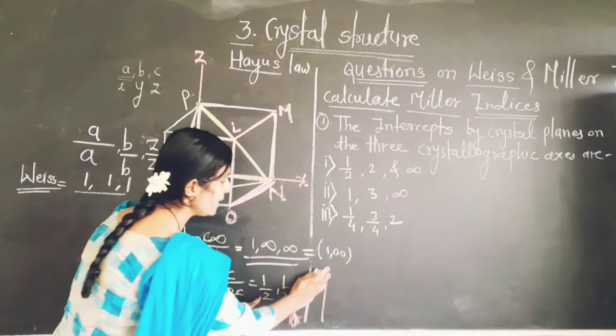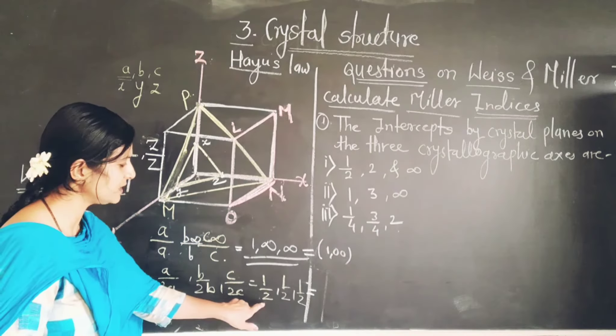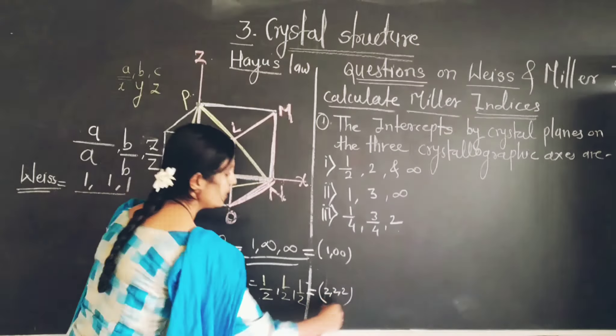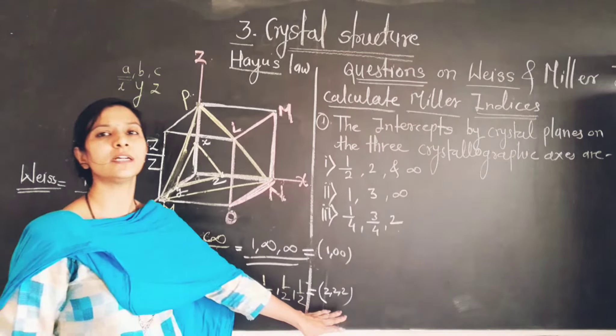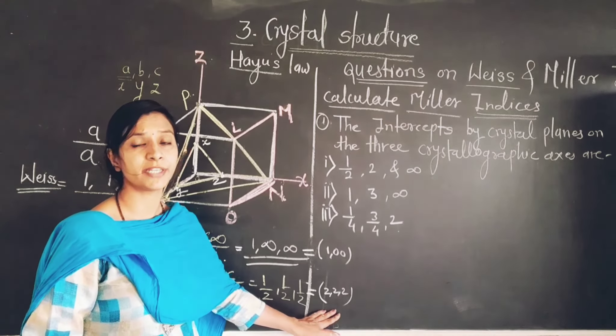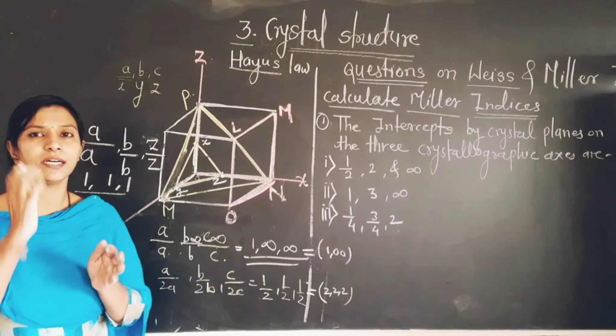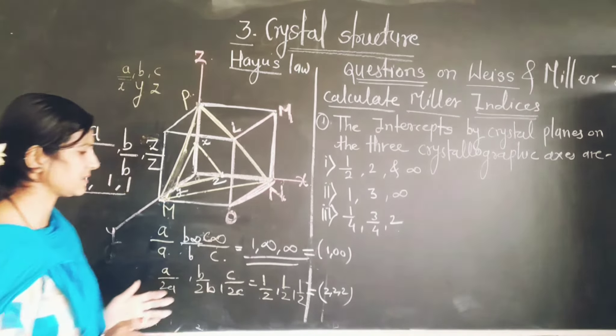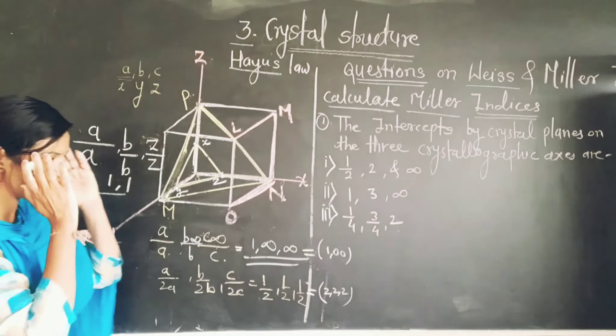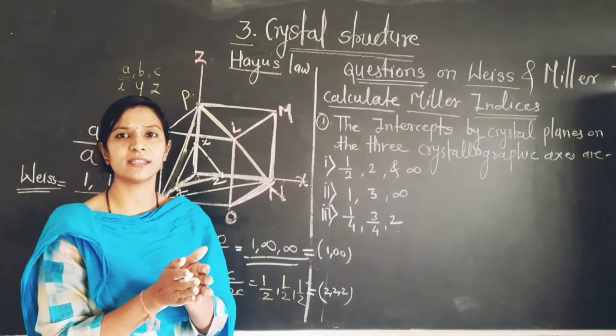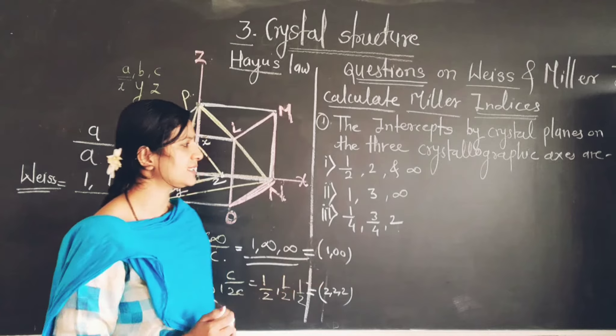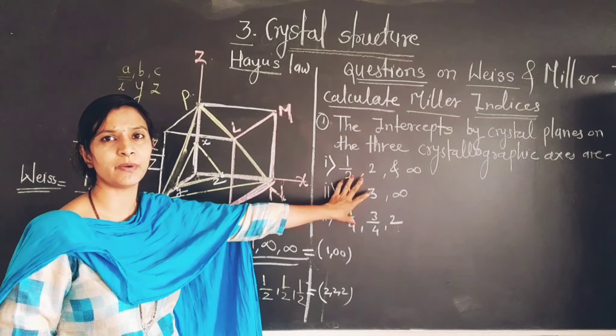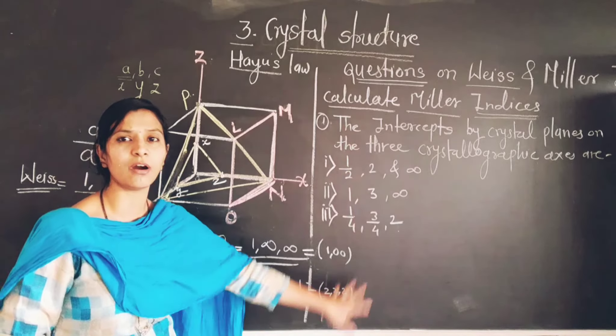And same thing, when I write the Miller indices for this plane, I will get here 2, 2, 2. And this plane also provides the particular information related to how the plane cuts the crystal on the particular axes. Here you just remember this - the Miller indices are nothing but the reciprocal of Weiss indices. And on that basis, we will solve those examples which I have already written on the blackboard.